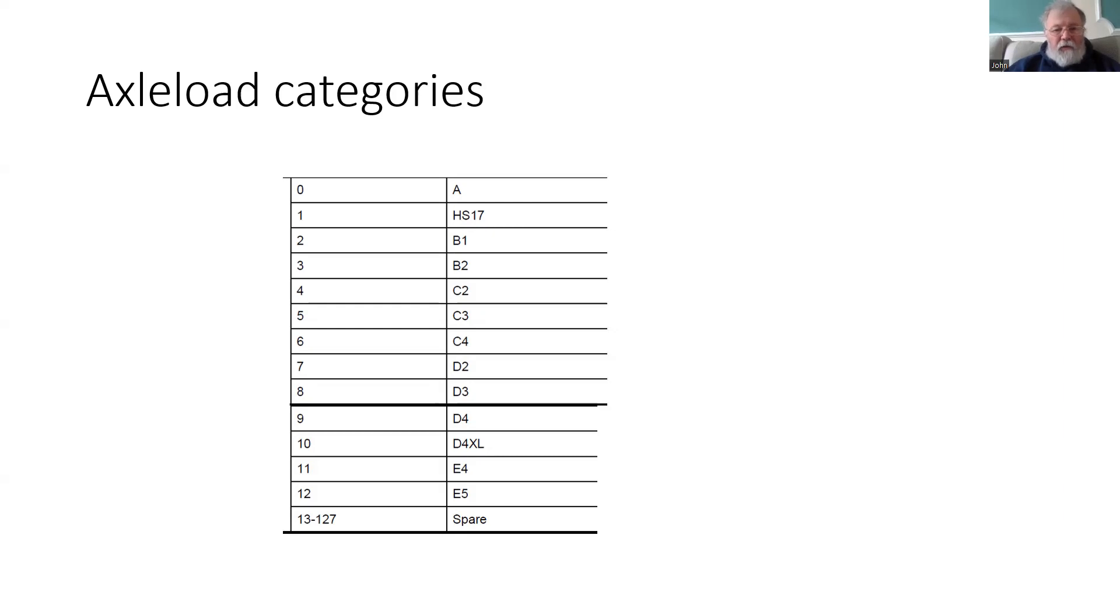There is a slight flaw in the list in that sometimes a vehicle in one category further down the list is actually less damaging than one higher up the list. It's not a perfect order, but it can be used to control access and speed over weak structures.